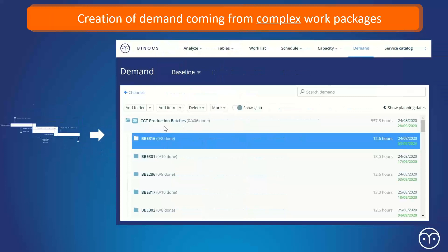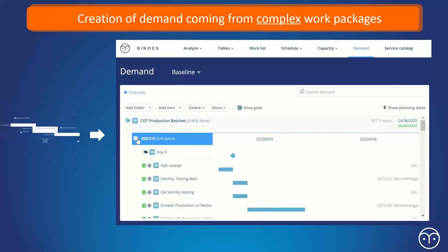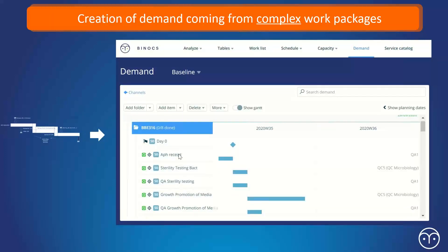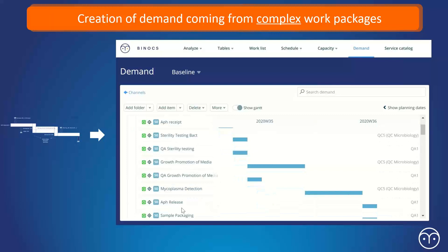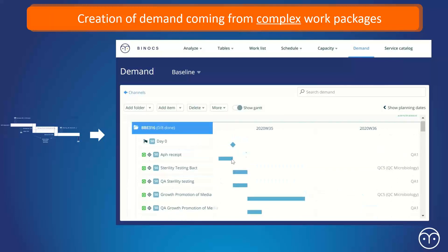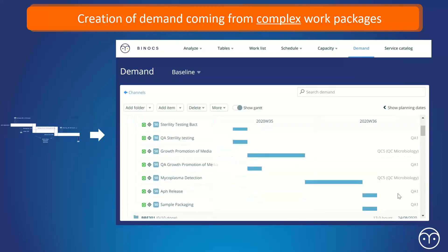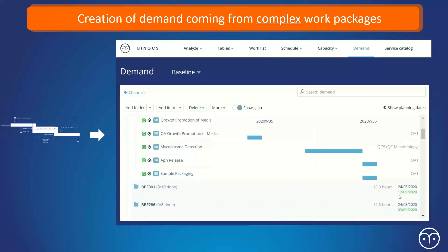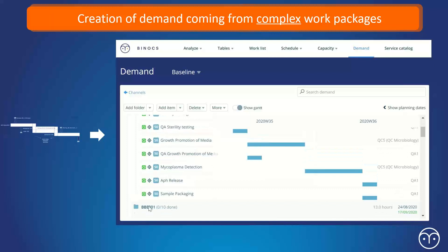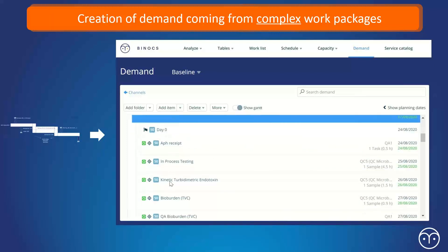So those, these what we call a demand models that fit into, you can see a visual representation here. So for example, that one batch would potentially have 15 or 20 work packages associated with it. And you can see the sequence of events here for that particular work package.